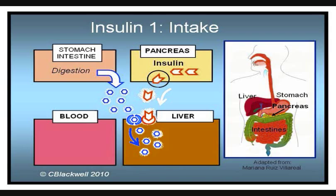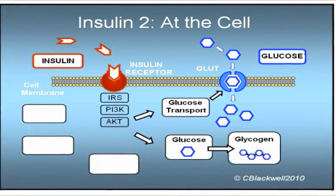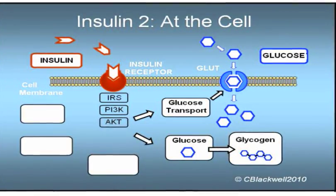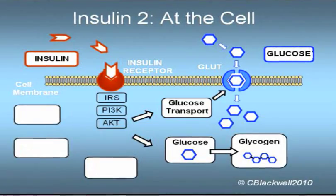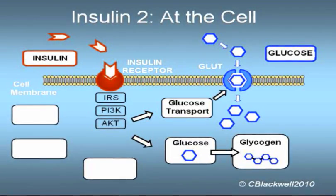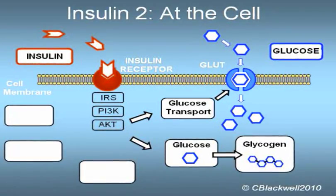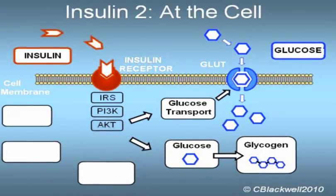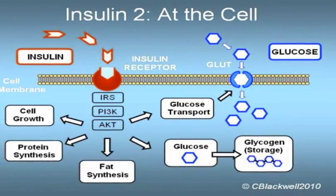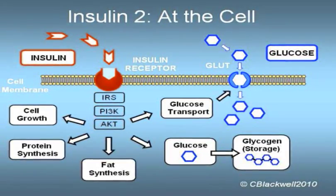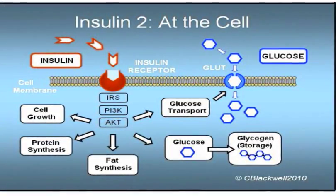And actually, insulin does a whole lot more. When insulin docks with the receptor on the surface of a cell, that activates a chain reaction inside the cell which produces multiple important results. Regarding glucose, insulin activates the transport of glucose from the blood to the inside of the cell. Second, it activates enzymes that assemble glucose into glycogen for storage. However, insulin also acts as a signal for cell growth, protein synthesis, and fat synthesis. That makes insulin a key factor in multiple parts of your metabolism.